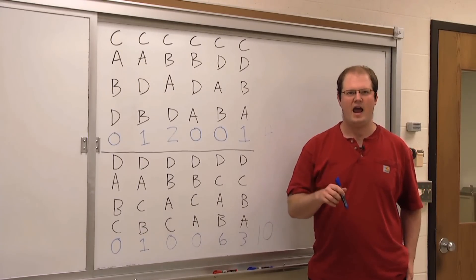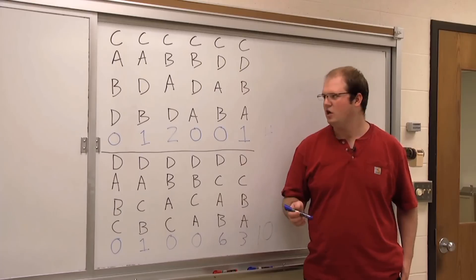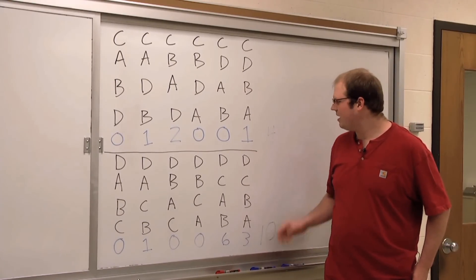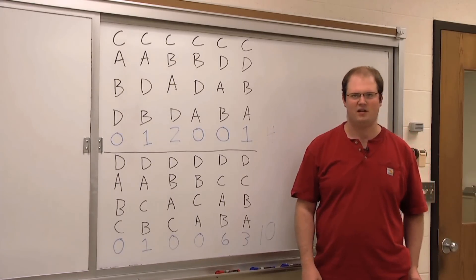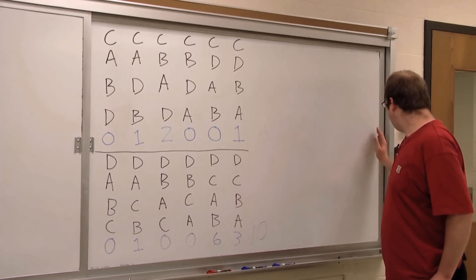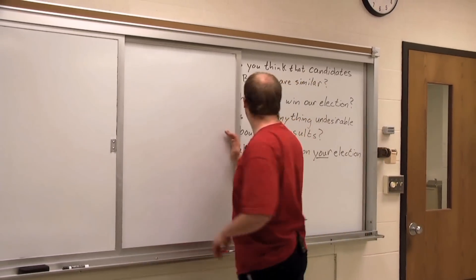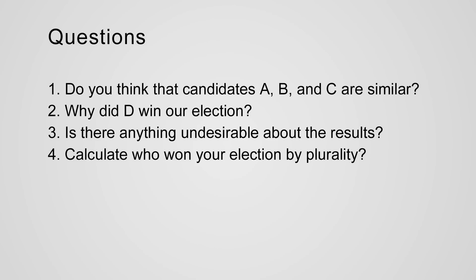Looking at the data, you can see that maybe everybody else didn't like D, but D is still the winner because that's the most votes by plurality. We have a few questions for you to try and answer during the break: Do you think candidates A, B, C, and D are similar? Why did D win our election? Is there anything undesirable about the plurality outcome? Take this time to also calculate who won plurality in your own election. The teacher can pause the video now.